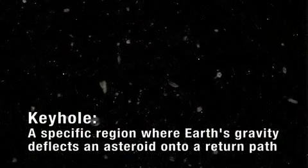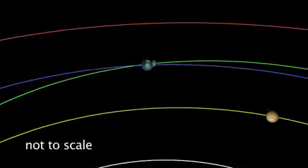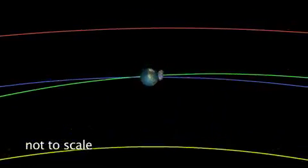There is a possibility that after it goes by the Earth, it may pass through a small doorway or keyhole, I call it, and be deflected by the Earth's gravity into an orbit that would be about seven-sixths of a year. The Earth would go around the Sun seven times, the asteroid would go around the Sun six times, and they would meet up at the same place at the same time on April 13, 2036.